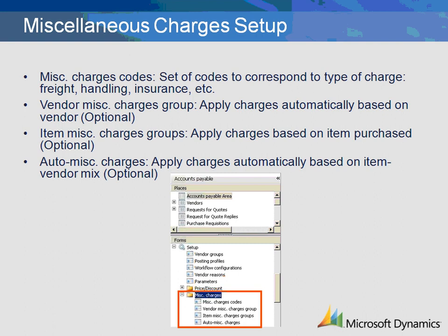Vendor miscellaneous charges are used to establish certain charges that can be applied to specific vendors. There are item miscellaneous charge codes that can be associated to particular items that are line items within a purchase order. Automatic miscellaneous charges are a way to define charges based on a particular vendor-item combination when a purchase order is created.